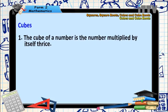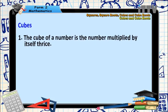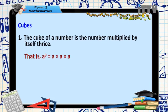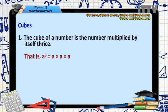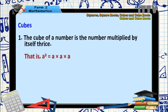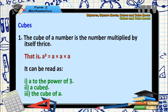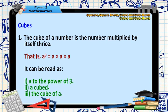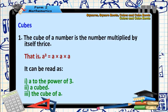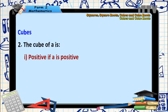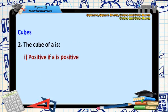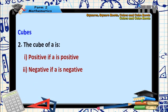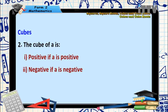The cube of a number is the number multiplied by itself thrice. That is, if a to the power of 3 is given, it actually means a multiplied by a multiplied by a. It can be read as a to the power of 3 or a cubed or the cube of a. The cube of a is positive if a is positive. The cube of a is negative if a is negative.